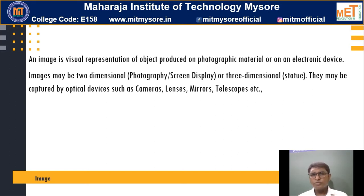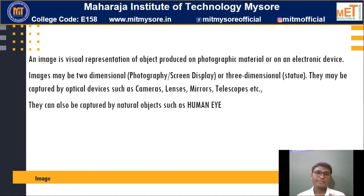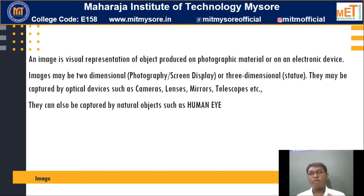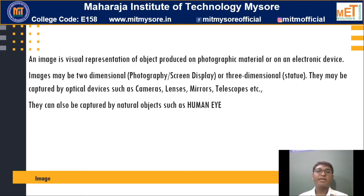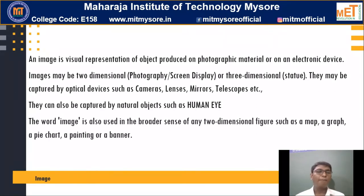Are these the only objects able to capture images? Not necessarily. You have one natural object called the human eye, which can capture images, process them, and send them to the brain. With this knowledge, we put up an image in a broader sense — it is just a two-dimensional image. It might be a map, a pie chart, a painting, or a banner as well.